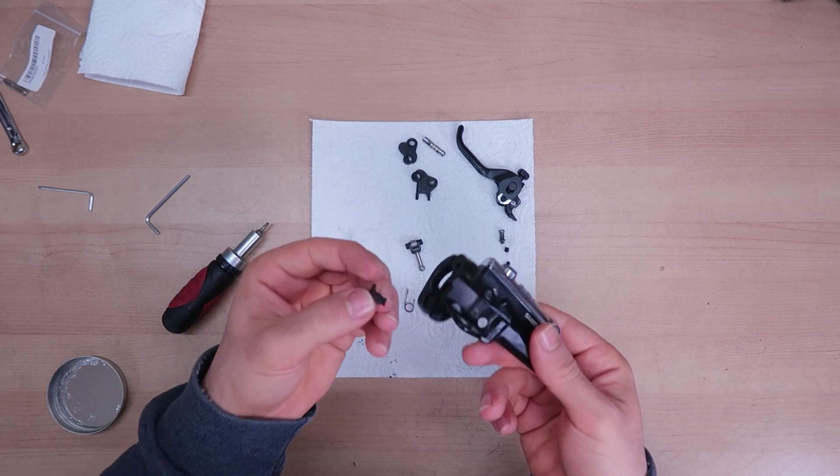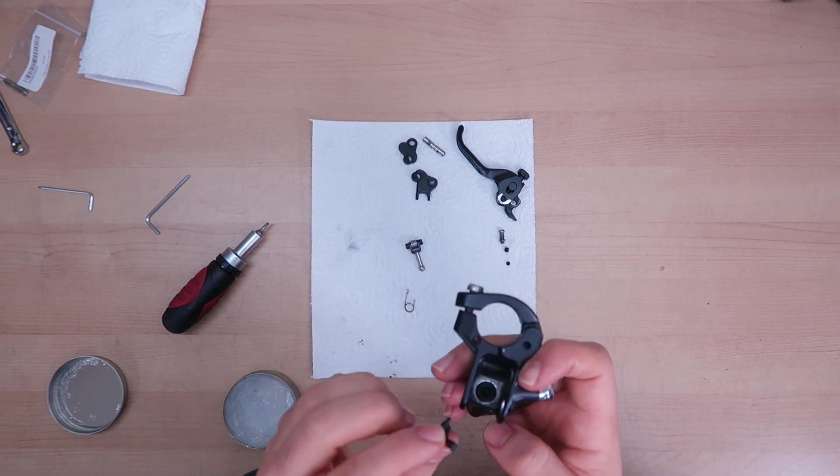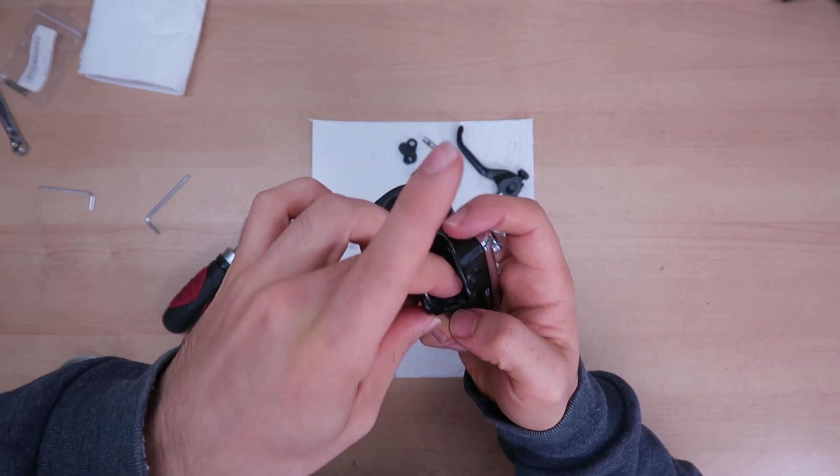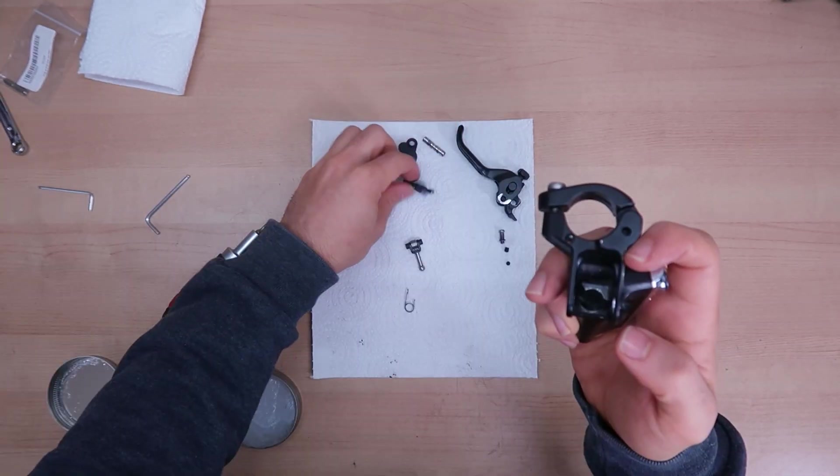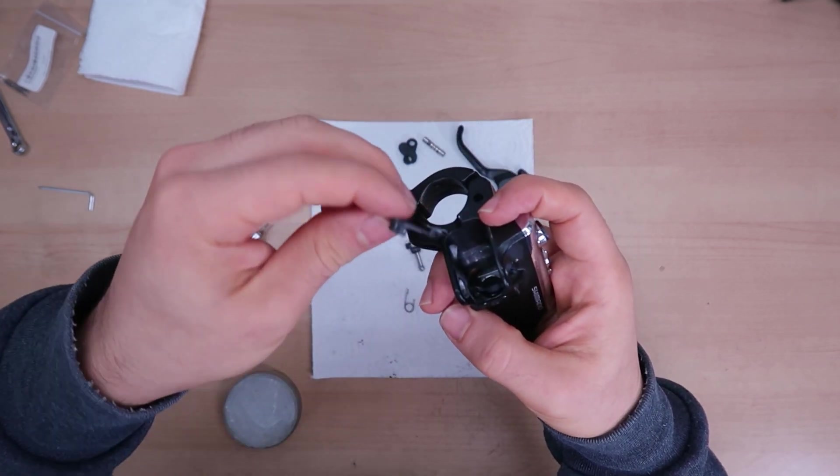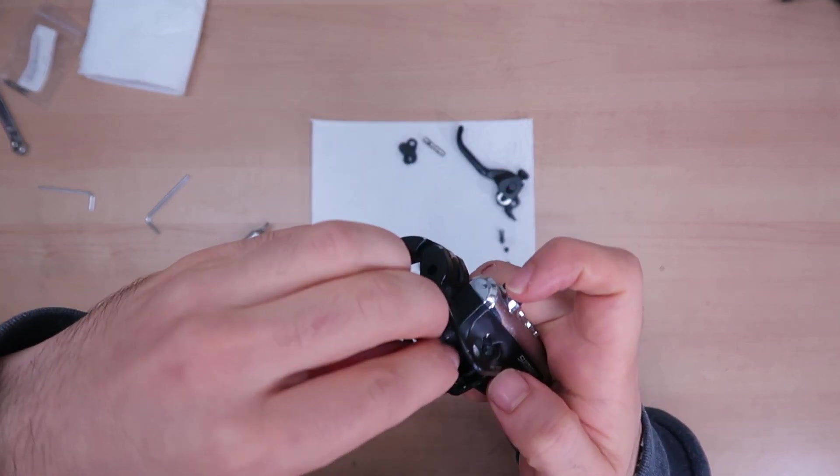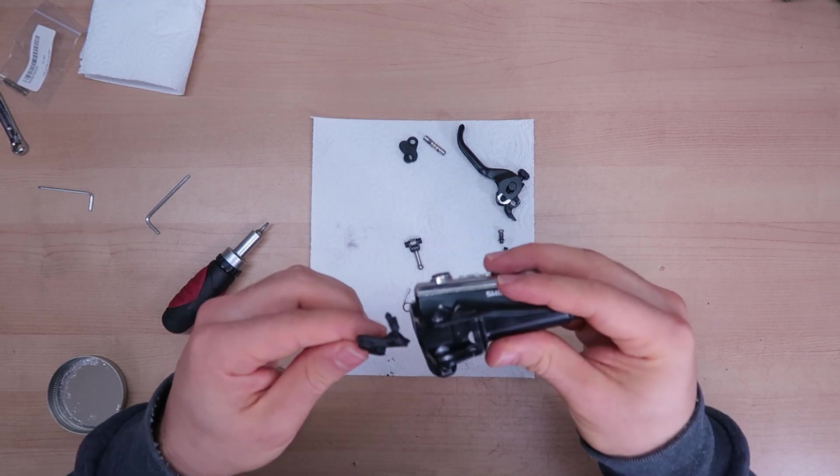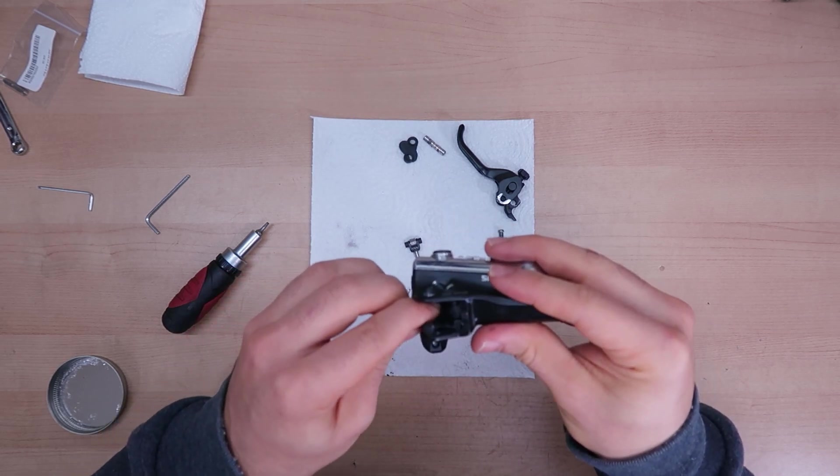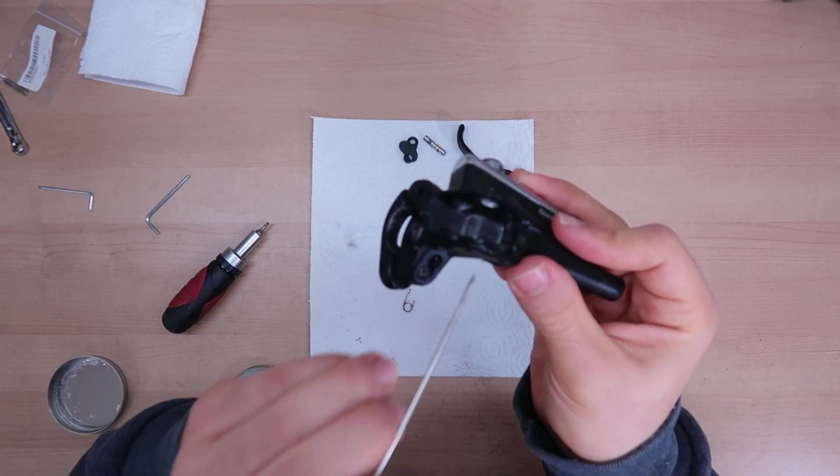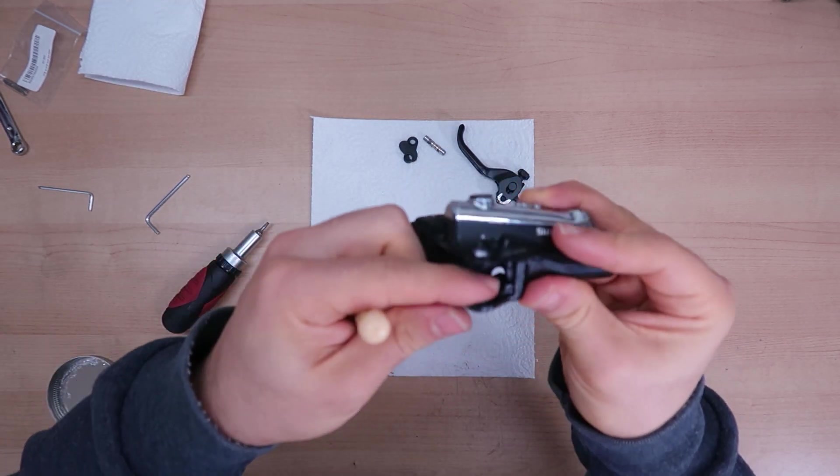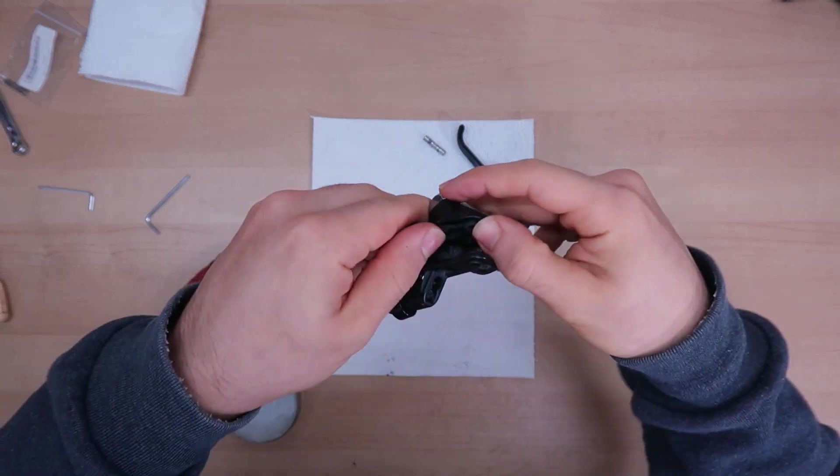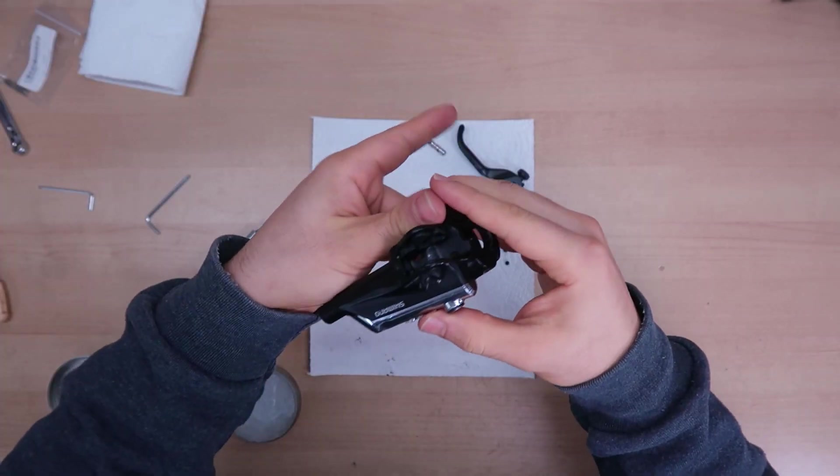The next part is the free stroke adjuster. So we have to put this in like this, and then this part here which has the two notches on the side goes in here. This part is always tricky to get right, but hopefully I'm going to get it right this time. And this side is in. Now I'm going to put the other side in as well, just like this. Both sides are in now.